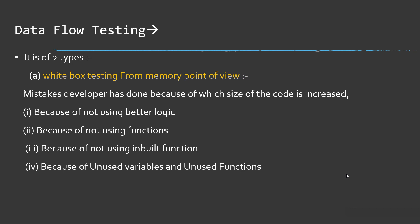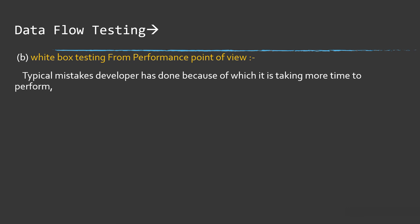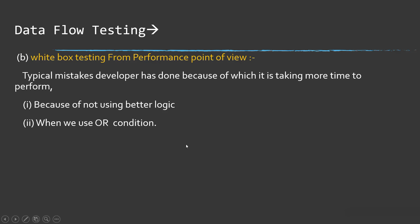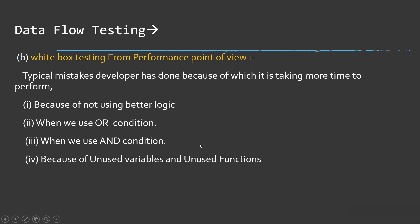White box testing from a performance point of view looks at typical mistakes developers have made that cause the program to take more time to execute — for example, not using better logic. When using OR in a condition, put the condition that most often returns true at the beginning, and the condition that most often returns false at the end. When using AND, put the condition that most often returns false at the beginning. Also consider unused variables and unused functions as performance concerns.